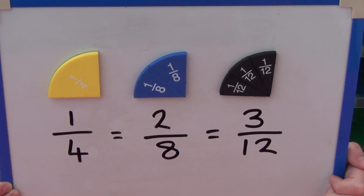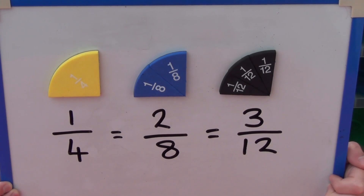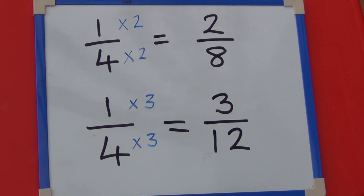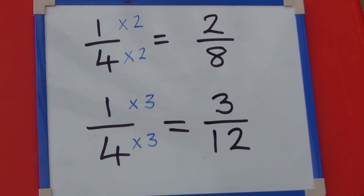One is a quarter of four, two is a quarter of eight, and three is a quarter of twelve. If we look at each of the equivalent fractions, whatever happens to the denominator also happens to the numerator. If we look at one quarter and two eighths, we have multiplied both the one and the four of one quarter by two to make two eighths.